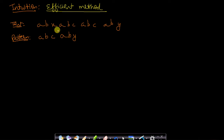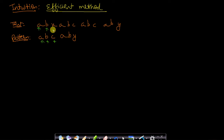Now let's look at the efficient algorithm. We convert the given list into the form of a string — this is the text and this is the pattern. The inefficiency in brute force is that when a mismatch occurs at c vs x, we reset i to the start and move j to the next position, restarting the entire search. This takes a lot of time.